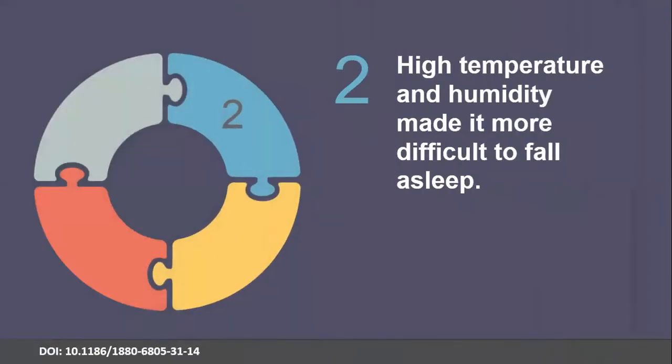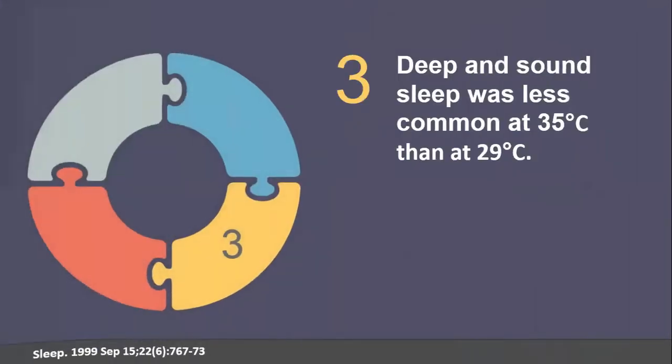The second paper says that high temperature and humidity make it more difficult to fall asleep. The third paper says that deep and sound sleep is less common at 35 degrees celsius than at 29 degrees celsius.